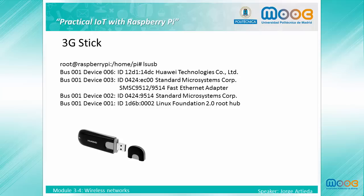If we have a 3G stick and want to get more information about what kind of device it is, we can use the lsusb command to get information about the devices connected to the USB ports. The information returned is very useful to find drivers and information about our hardware. Here we can see the information returned by our Huawei E303 stick.